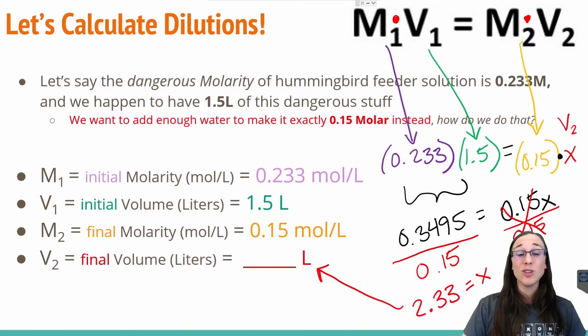So remember, V2 is a final total volume. So altogether, we should have 2.33 liters of total solution in order to have a molarity of 0.15 safe hummingbird feeder solution.